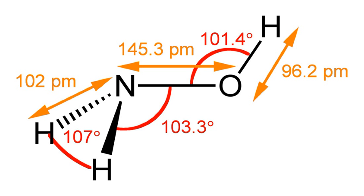NH2OH can be produced via several routes. The main route is via the Raschig process.